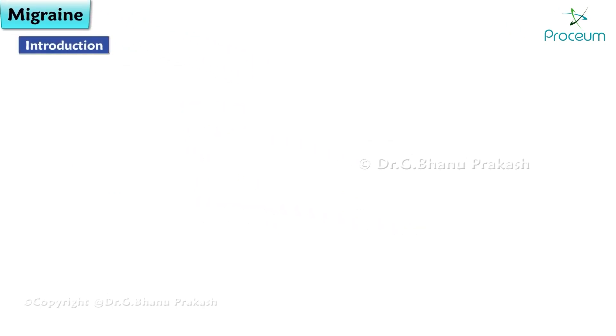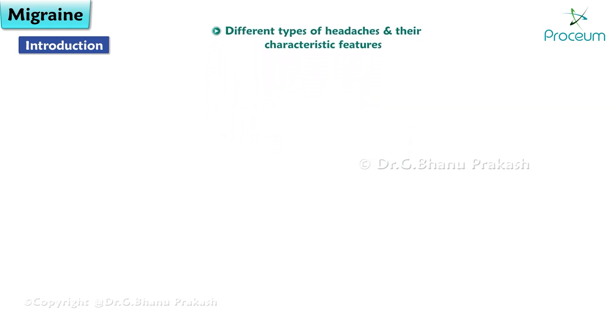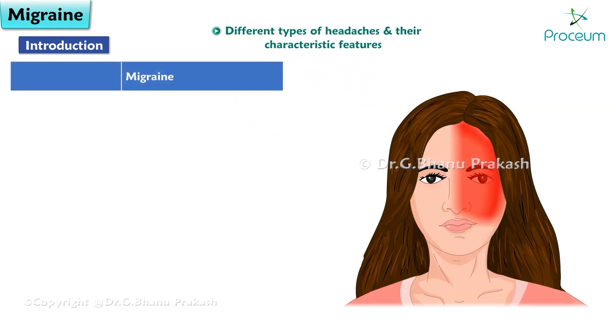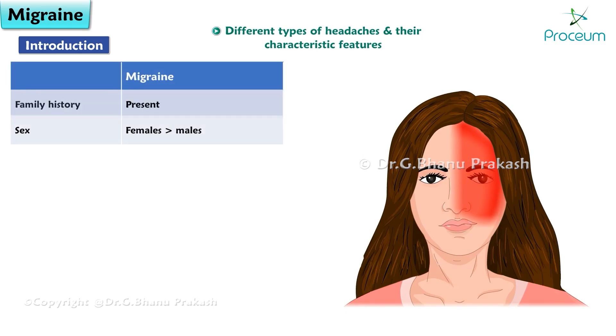Here is a table showing different types of headaches and their characteristic features. In migraine headache, family history is present and females are affected more often than males.